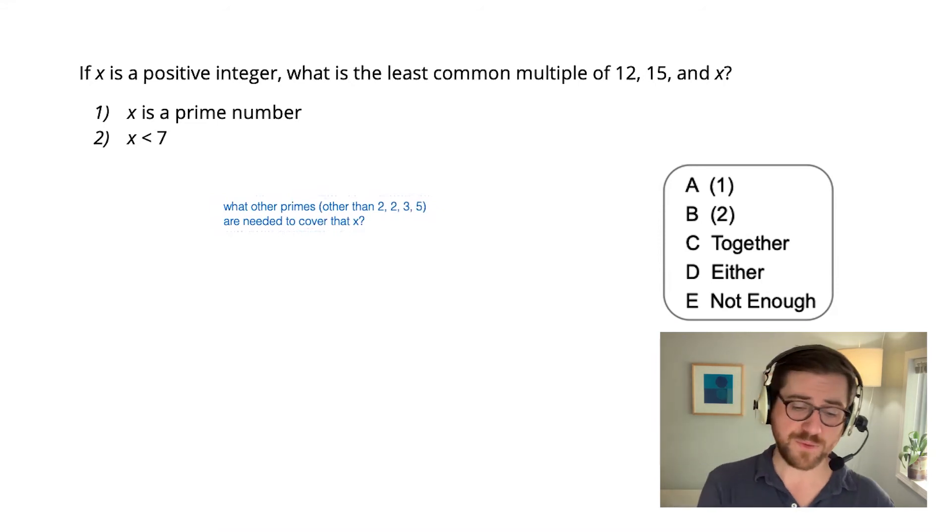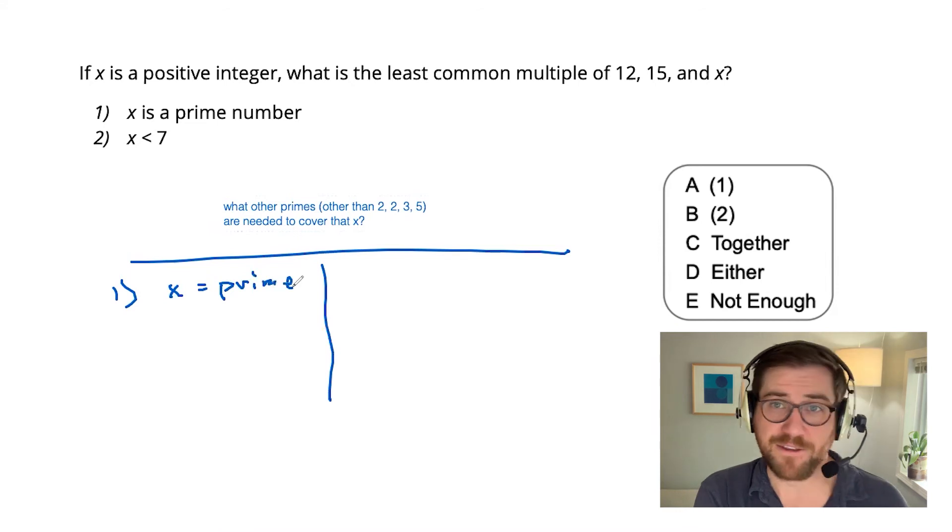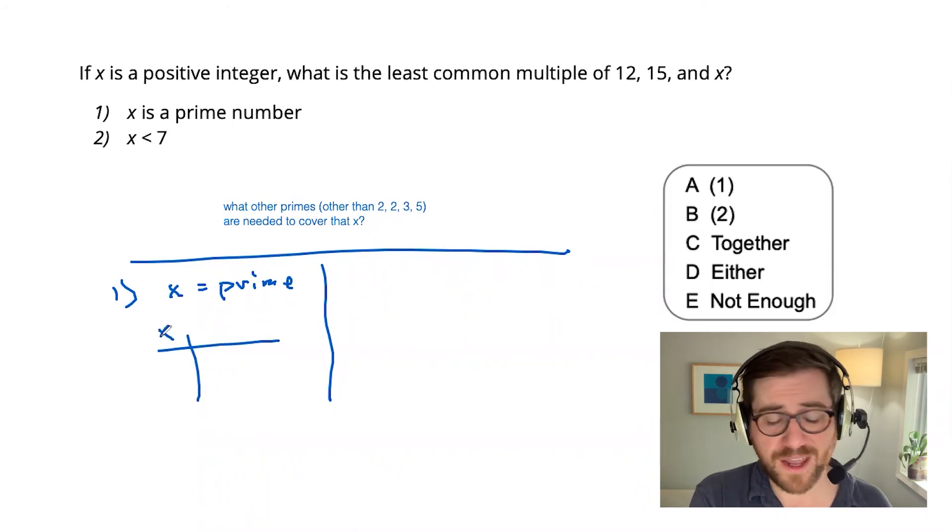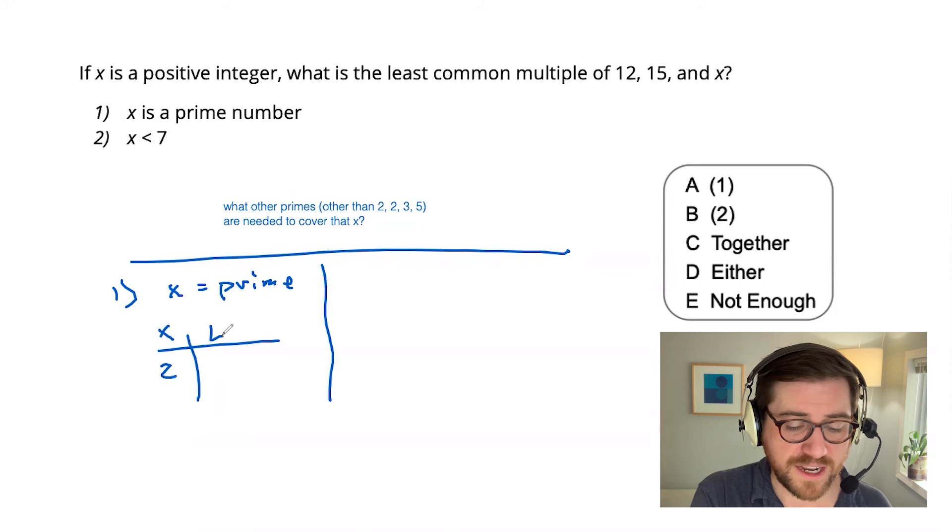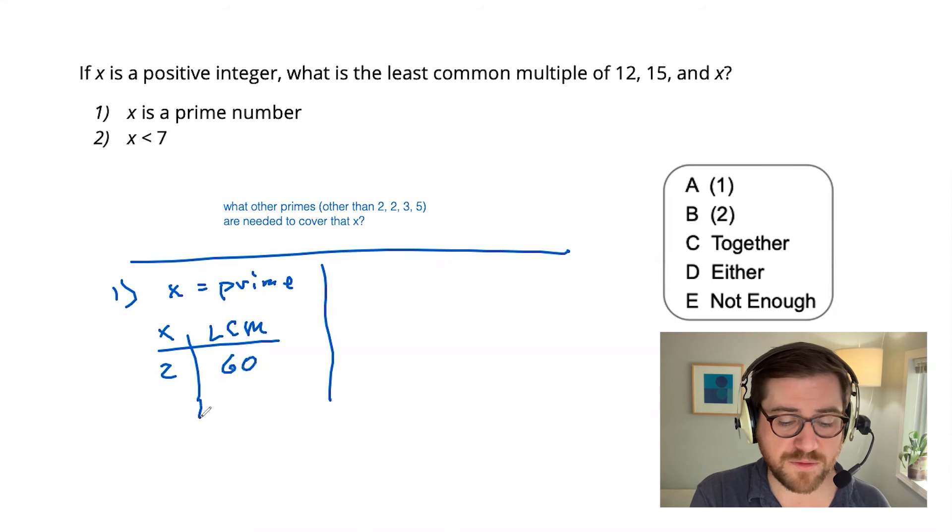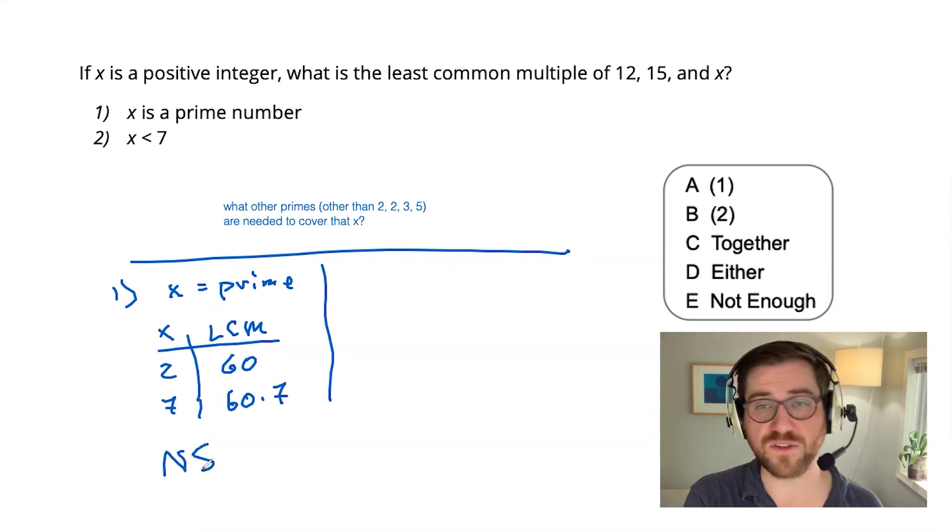Let's dive into the statements. We need to tackle these one at a time here. So for statement one, x is a prime number. I'm already pretty suspicious of this. I don't feel like this is going to be sufficient because there are infinitely many primes, but let's confirm it. I'm going to test cases to just demonstrate that I can get different answers here. So on the one hand, x could just be 2, and then that doesn't do anything to the LCM because 2 is already covered, so it's still 60. On the other hand, x could be something like 7. And then I would need to toss a 7 into the LCM calculation, so that would provide a different value there. This is not sufficient to answer the question.